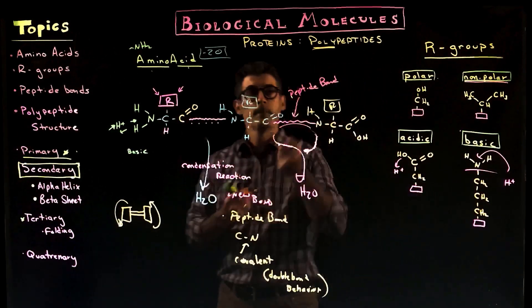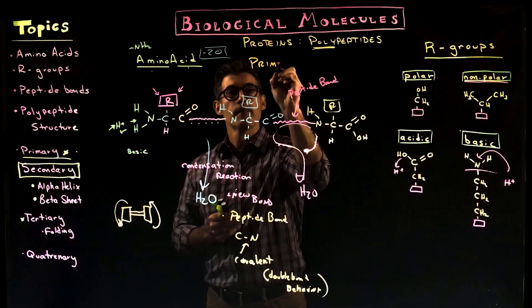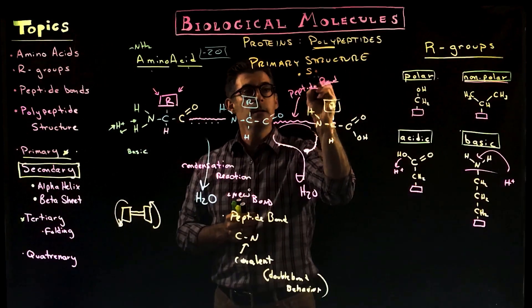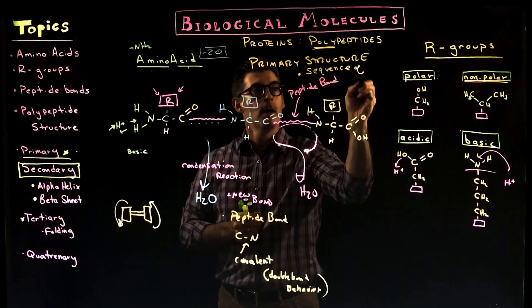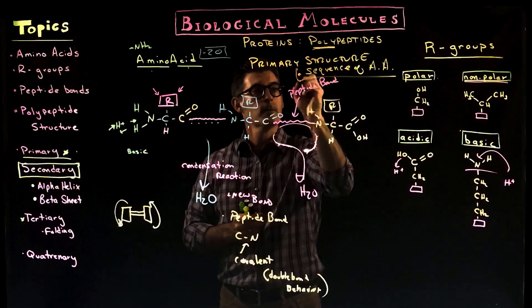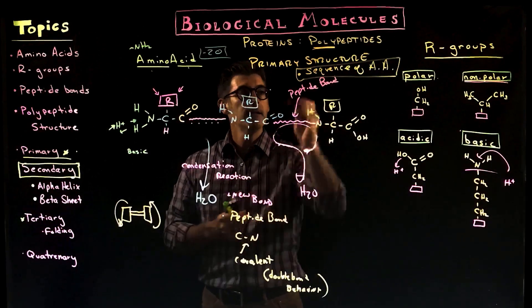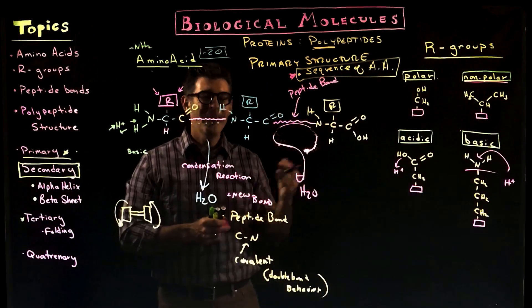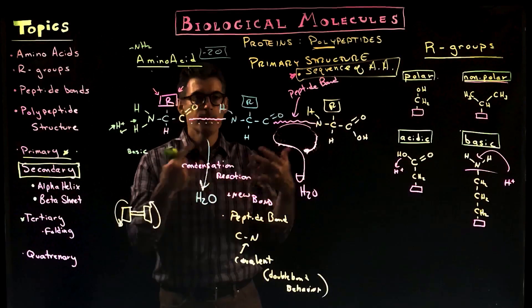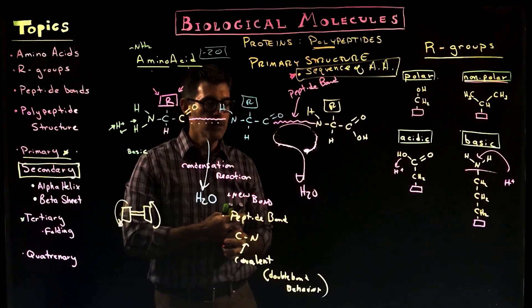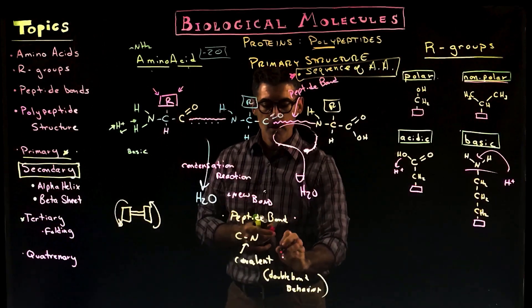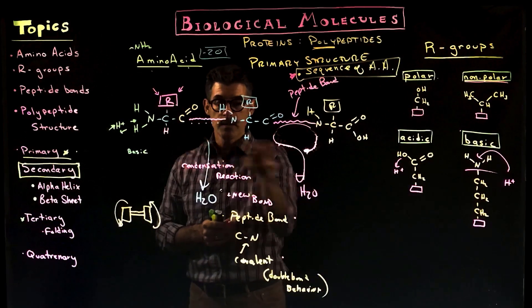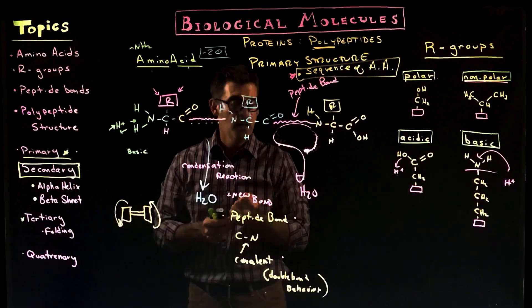That's what we call primary structure — the sequence of amino acids. The other thing to know about primary structure is what type of bond holds it together: it's held together by peptide bonds, which are covalent bonds, always between a carbon and a nitrogen. That's the rule — it has to be that way and only that way. That's what you need to know about this aspect of the material.